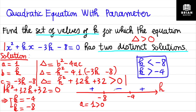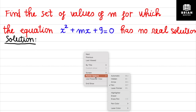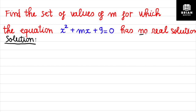That's the complete working for the first exercise. The second question is: find the set of values of m for which the equation has no real solution. No real solution means the discriminant has to be less than zero. So we need to find the discriminant for this equation first.